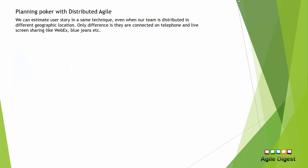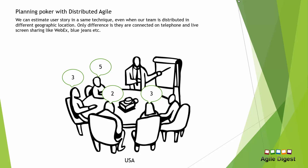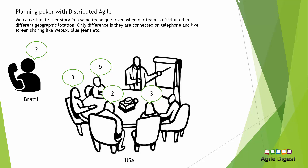I have a few more tips regarding planning poker. Number one: how to do planning poker in a distributed team. Here everyone was sitting in one room, but if a team member is in a different geographical location — for example, someone in Brazil or India — they can join via telephone or a conference tool like Webex or BlueJeans, use screen sharing, and express their vote by simply saying their story point number. You don't need to be in one place to cast your vote.